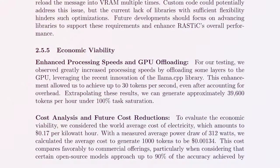In the realm of economic viability, we looked at enhancing processing speeds via GPU offloading and conducted a comprehensive cost analysis. By strategically offloading select layers to the GPU — a feature found in the development branch of the llama.cpp library — we achieved an improved speed of up to 30 tokens per second. Extrapolating from these findings, our projections suggest the potential generation of around 40,000 tokens per hour, assuming the outstanding job pool is saturated.